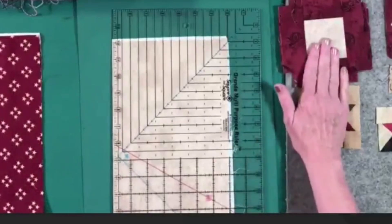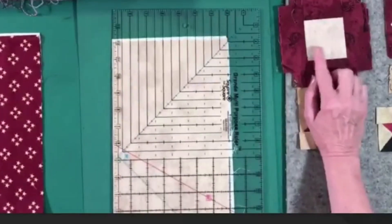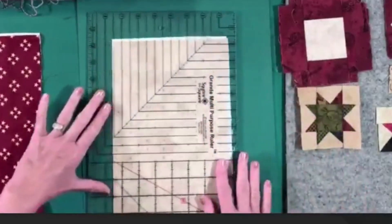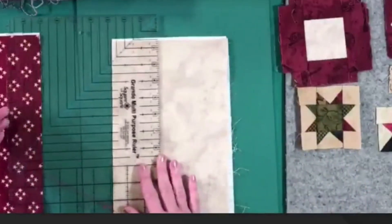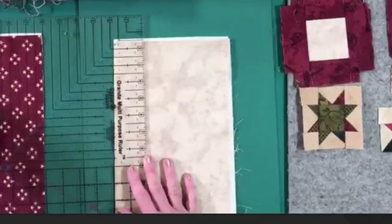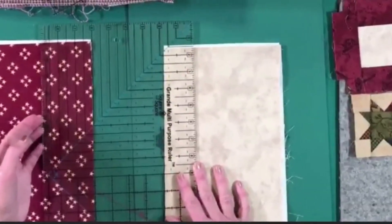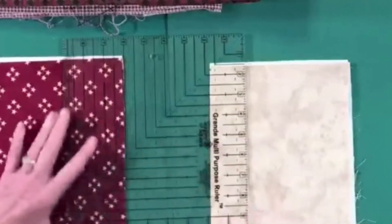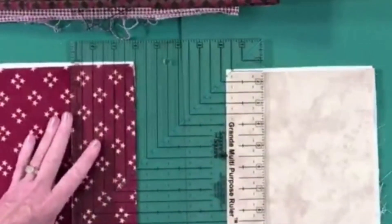Now my center squares are going to be three inches and so my strips are one and three fourths. So I'm just going to slide my Grande over until I have my one and three fourths marking. So I have a little arrow right there and I can look up here and see it's my one and three fourths and all the way down to the end.